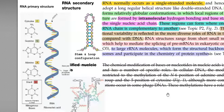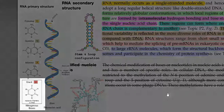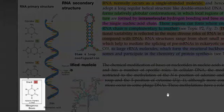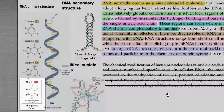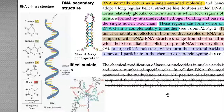In RNA, as you already remember, the nitrogenous base is uracil and not thymine. Thymine is the one which is present in DNA. So these are the small differences existing between RNA and DNA. The RNA molecule is a linear molecule compared to the double helix molecule of DNA.